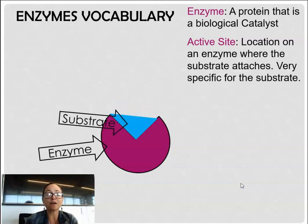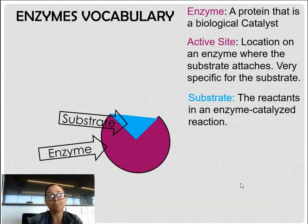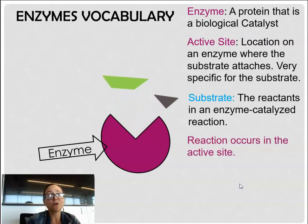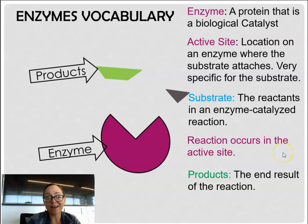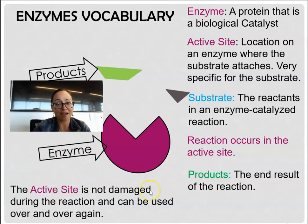When we think about chemical reactions, you start with a reactant and then end with a product. In reactions catalyzed by enzymes, we call that reactant a substrate. The reaction occurs at the active site, and then products are produced. The active site is not damaged by the reaction — it can be used over and over again.